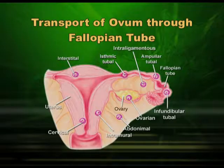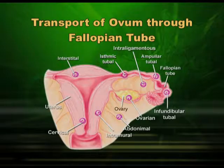You can see the transport of the ovum — the fertilized egg in the fallopian tube. If it were only an unfertilized ovum, it would not move beyond the initial one third of the fallopian tube because it would die after 48 hours. But if fertilized, it moves gradually — first day, second day, third day, fourth day — and in 6 to 7 days it will reach the uterus and the uterine endometrium where it will get implanted.